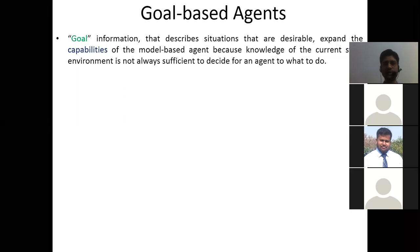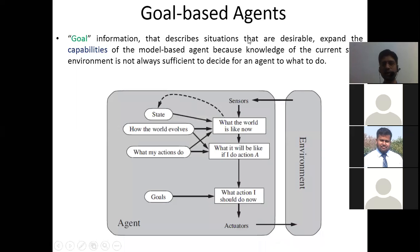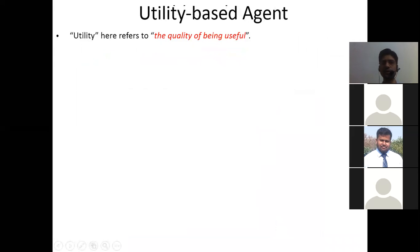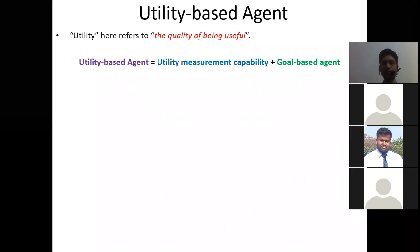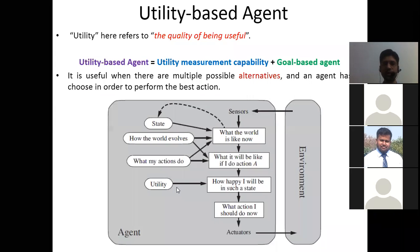In goal-based agents, the information of the goal — which is missing in previous models — is added. If you have the goal information, you can consider whether you are going in the right direction. This goal-based agent has additional goal information; all previous information is there and we also know the goal and where we are going. In a utility-based agent, utility is the quality of being useful. We have a number of choices and decide which choice, if used, leads to the best outcome — it is a combination of a goal-based agent plus a utility measure capability.